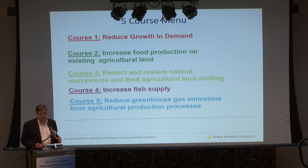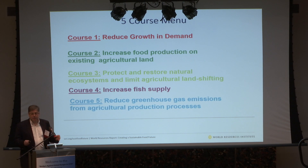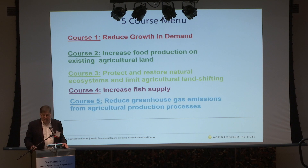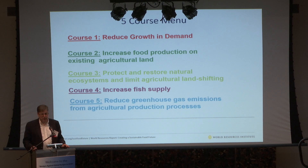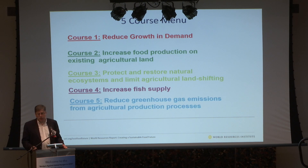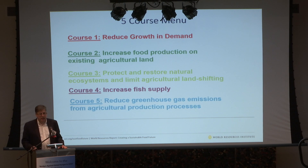One of the five courses is reducing the growth in demand. Technically, we could feed the world today with existing food production on two conditions: completely equitable distribution of all the world's food to every person, and stopping all consumption of animal products entirely. That's not going to happen.